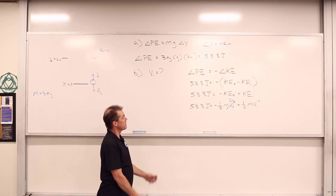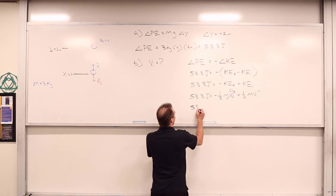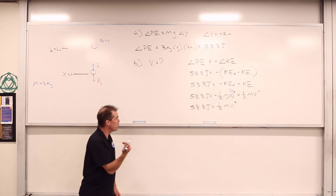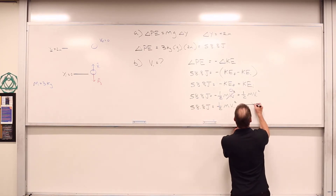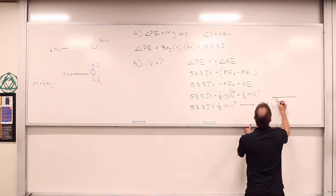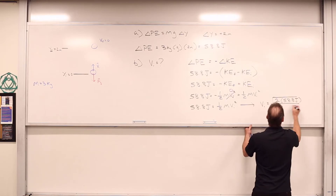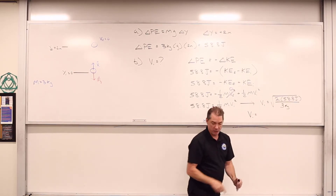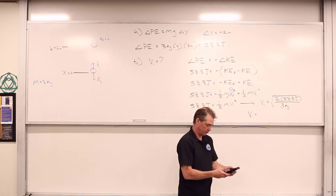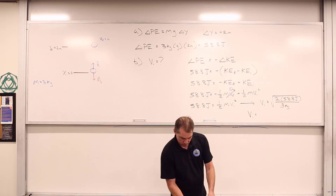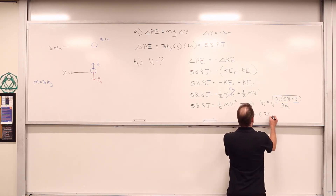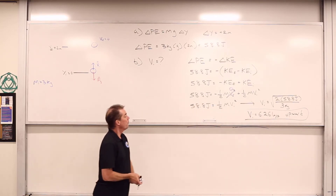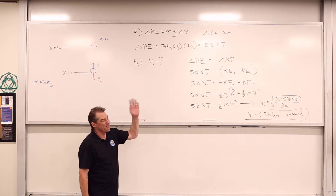So: 58.8 joules equals negative one-half mv_final squared plus one-half mv_initial squared. Since we know that at maximum height the velocity is zero, that final term equals zero. We're left with 58.8 joules equals one-half mv_initial squared. Multiplying by 2, dividing by m, and taking the square root of both sides, we get v_initial equals the square root of 2 times 58.8 joules divided by 3 kilograms, which gives us 6.261 meters per second, going upward.